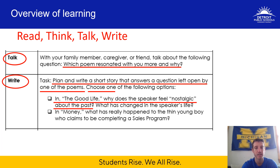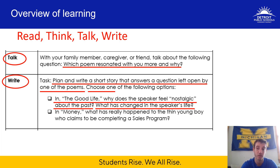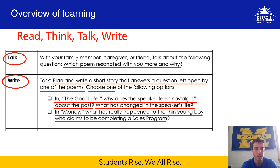The first option is about The Good Life. In The Good Life, why does the speaker feel nostalgic about the past? What has changed in the speaker's life? The speaker never tells you directly why they feel nostalgic, but you have to make your own inference as to why they feel nostalgic and what has changed. I recommend rereading the poem, but you also can and should use your annotations.